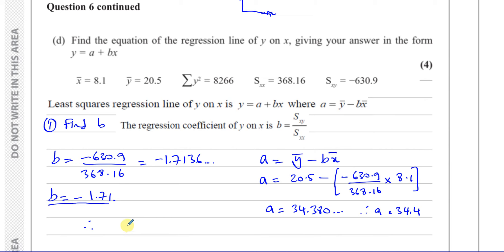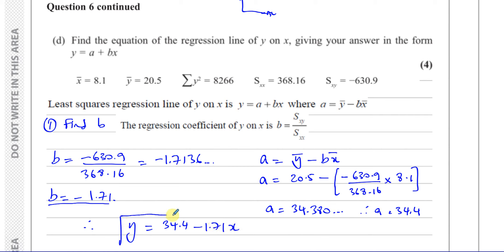Therefore the equation of the regression line of y on x is: y equals 34.4 minus 1.71x. That's the answer to part D.